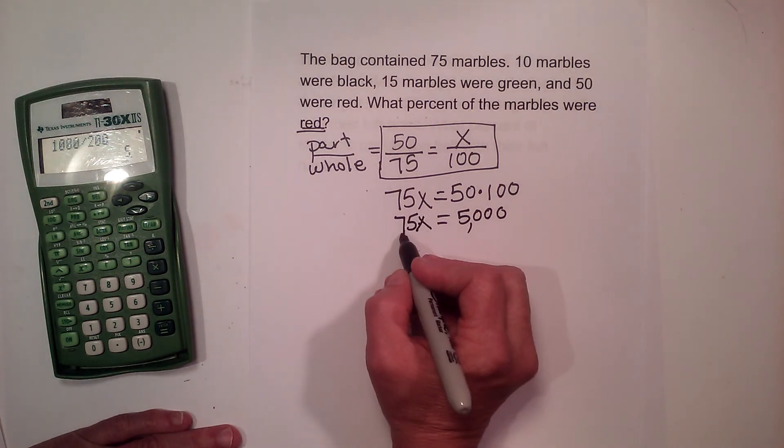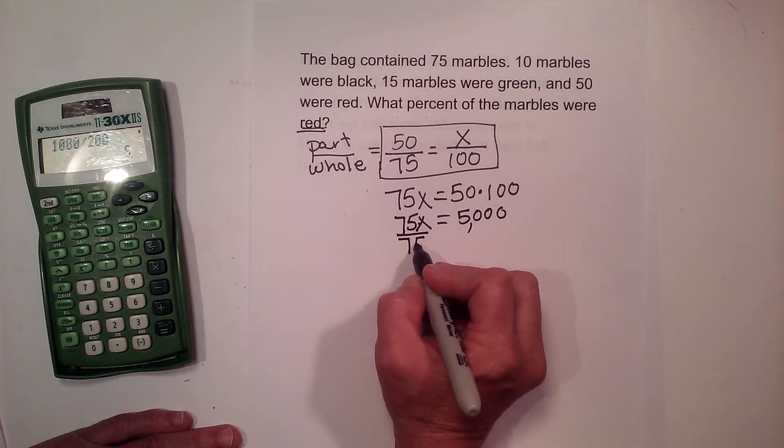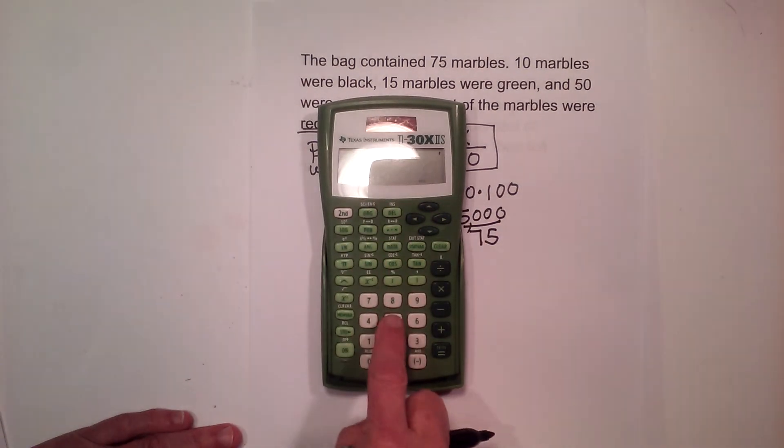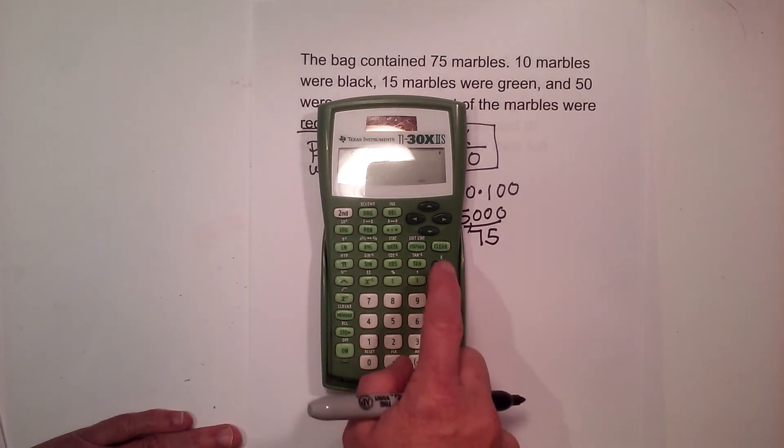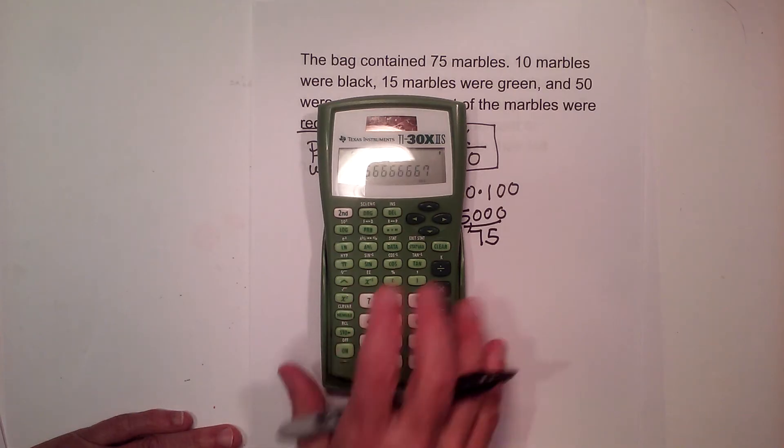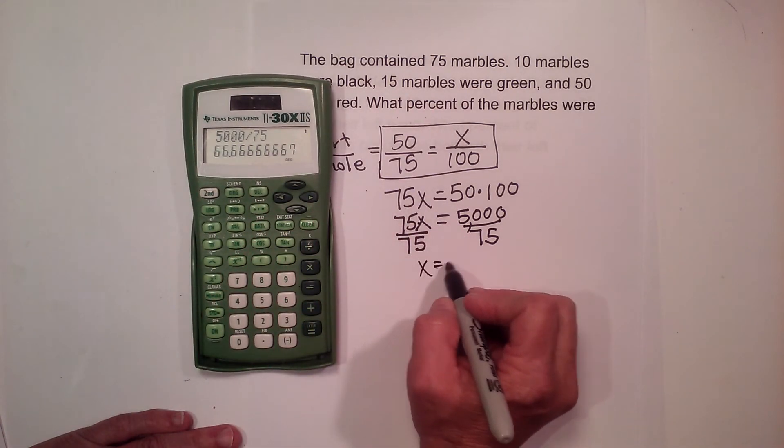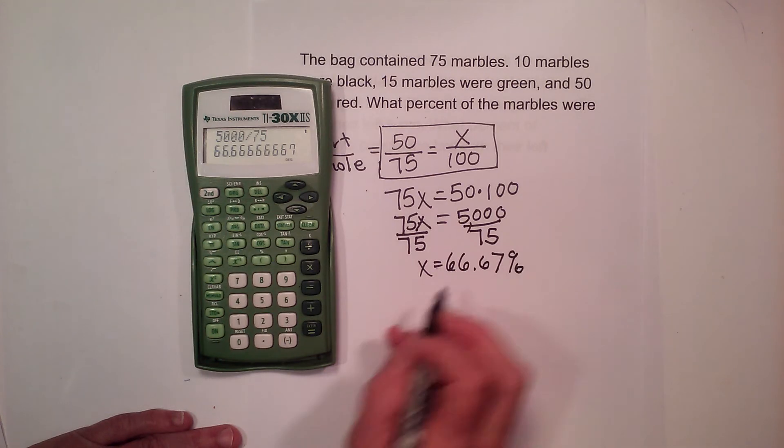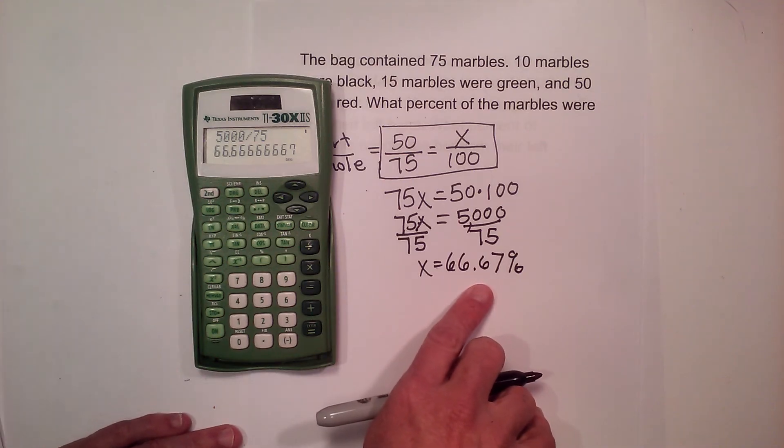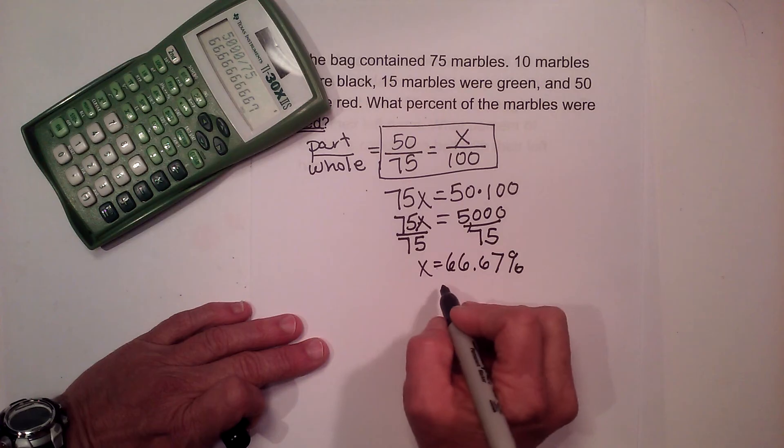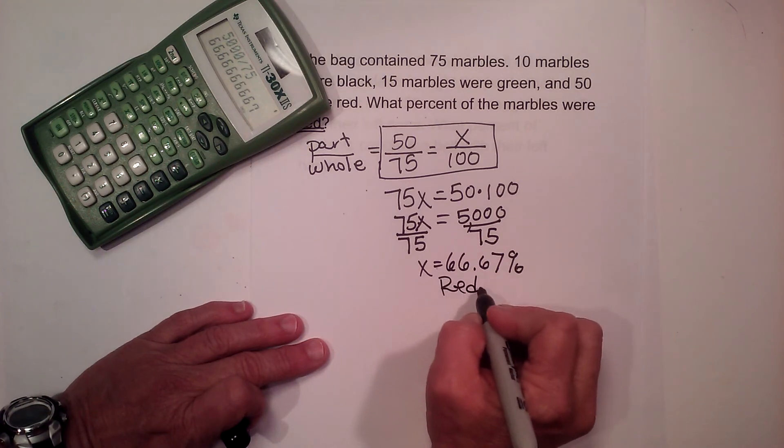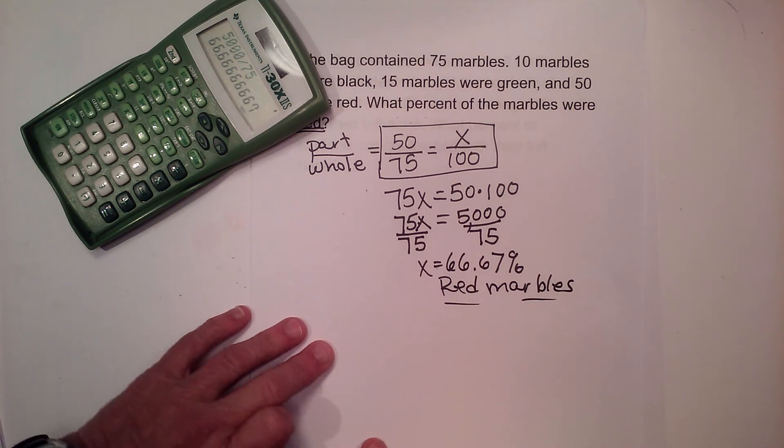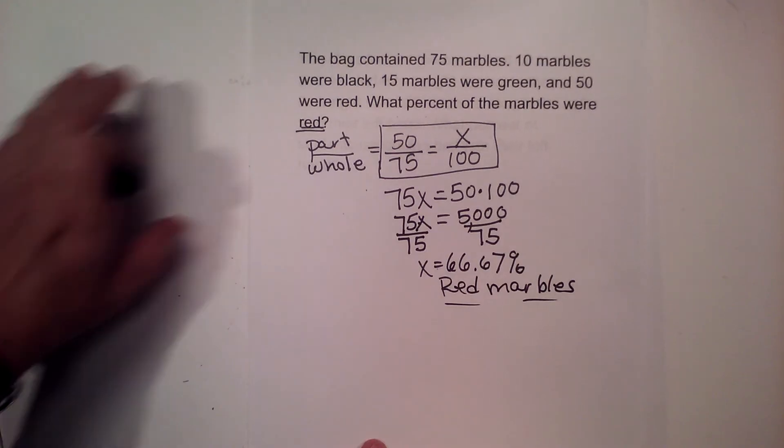To undo multiplication we're going to divide by 75 because you always want to get the x by itself. So let's take 5,000 divided by 75, and that gives us 66.66 repeating, which would be 66.67 percent. So that's the number of red marbles. So when you're doing word problems you always want to add some meaning to our word problem by adding some kind of units.